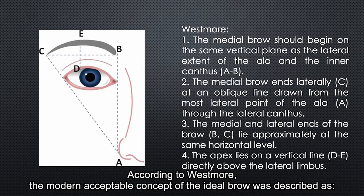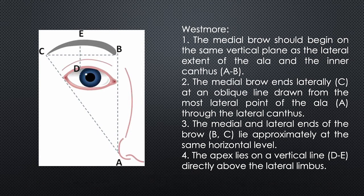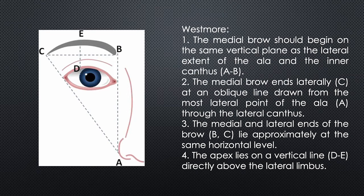According to Westmore, the modern acceptable concept of the ideal brow was described as follows: the medial brow should begin on the same vertical plane as the lateral extent of the area in the inner canthus. The middle brow and lateral brow reach as an oblique line drawn from the most lateral point of the area through the lateral canthus. The middle and lateral ends of the brow lie approximately at the same horizontal level, and the apex lies on the vertical line directly above the lateral limbus.